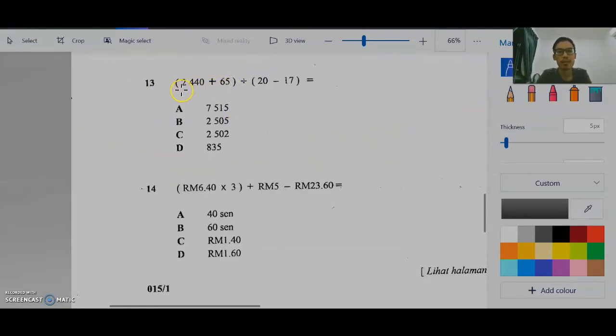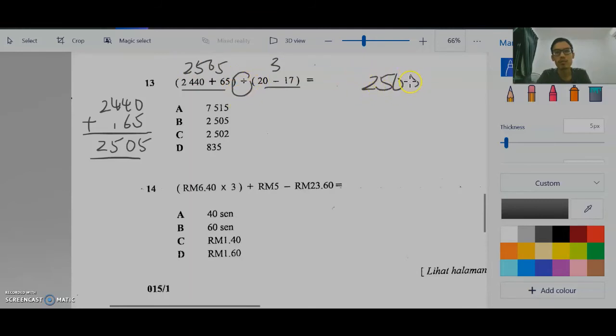Question 13. You have to solve the one in the bracket first. Jawab yang ada dalam kurungan dulu. So, 2040 tambah 65. Tambahkan. This is 2,500. 5. 20 minus 17 is 3. So, now you divide. 2,505 divided by 3. 8, 3, 2, 4. Balance 1. Bring down 0. 3, 3, 9, 9. Balance 1. Bring down 5. 5, 3, 1, 5. So, jawapan dia 835.